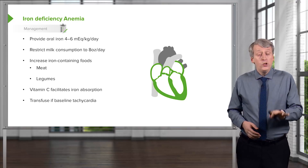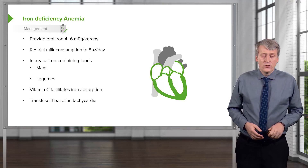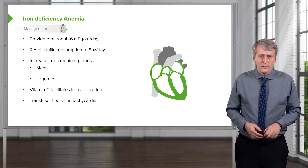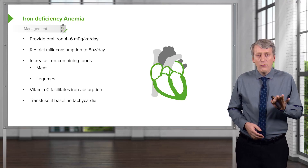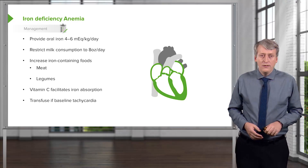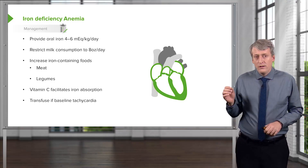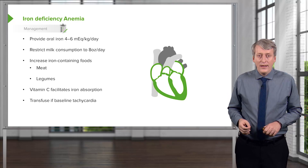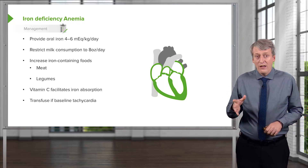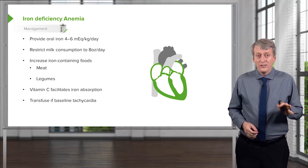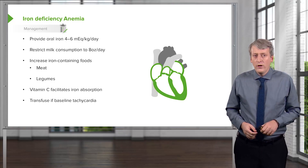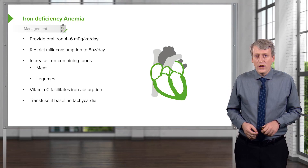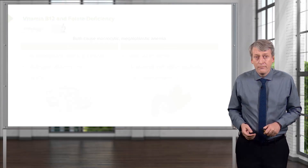However, you may use the hemoglobin number in certain circumstances. For example, if a patient has a brisk GI bleed and their hemoglobin was 9 and then dropped to 7 but they're still not tachycardic, I'm probably going to transfuse that child — because next time I check, they could be at 5.